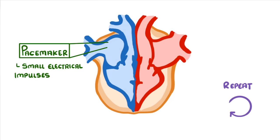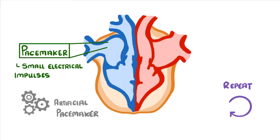In some rare cases though these pacemaker cells don't work properly. To fix this, doctors can implant an artificial pacemaker, which is a small device that we place just under the skin above the heart and has a wire that can carry an electrical current down to the heart, telling it to contract regularly just like healthy functioning pacemaker cells would.